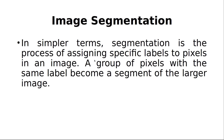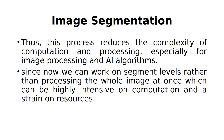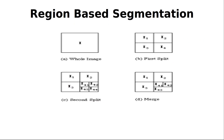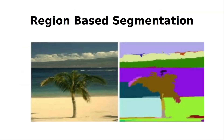We are assigning an individual label to each pixel. For example, this is the whole image. After splitting — segmenting the image — it will be given as I1, I2, I3, and I4. So there are four segments. I give I1 one label, I2 another label, I3 another label, and finally I4 another label.